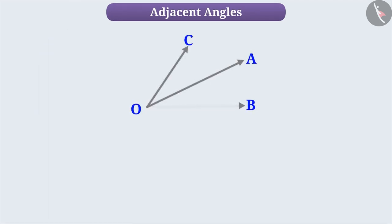Suppose Ray OB, OA and OC start from the common vertex and extend in different directions. In this way, they form angles AOB, angle AOC and angle BOC. If we talk about angle AOB and angle AOC, then there are few facts to consider.